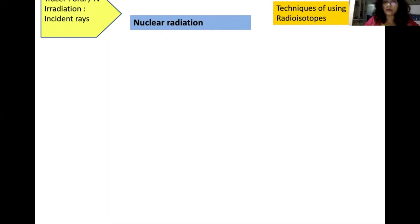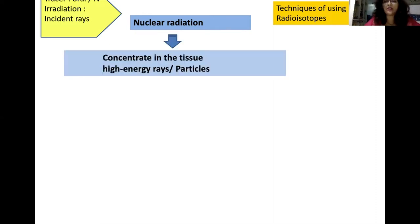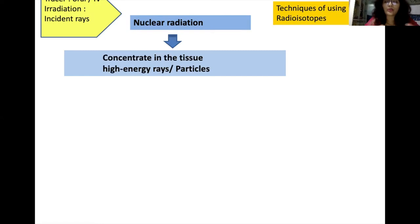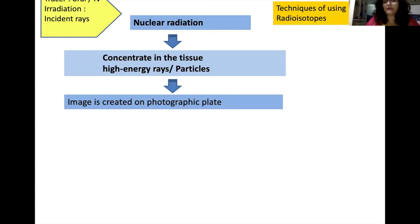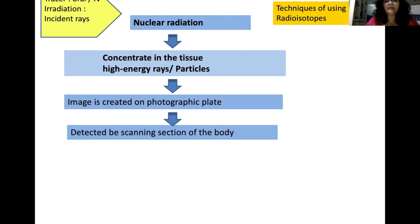The second type involves nuclear radiation in the form of incident rays, as seen in X-rays and CT scans. This nuclear radiation gets concentrated in the tissue. For example, iodine-131: as we know, iodine is taken up by thyroid tissue. When given in tracer dose, after a few hours it gets concentrated in the thyroid gland. Since iodine-131 is a radioisotope, it emits high-energy rays or particles, which create an image on a photographic plate or can be detected by scanning that section of the body.